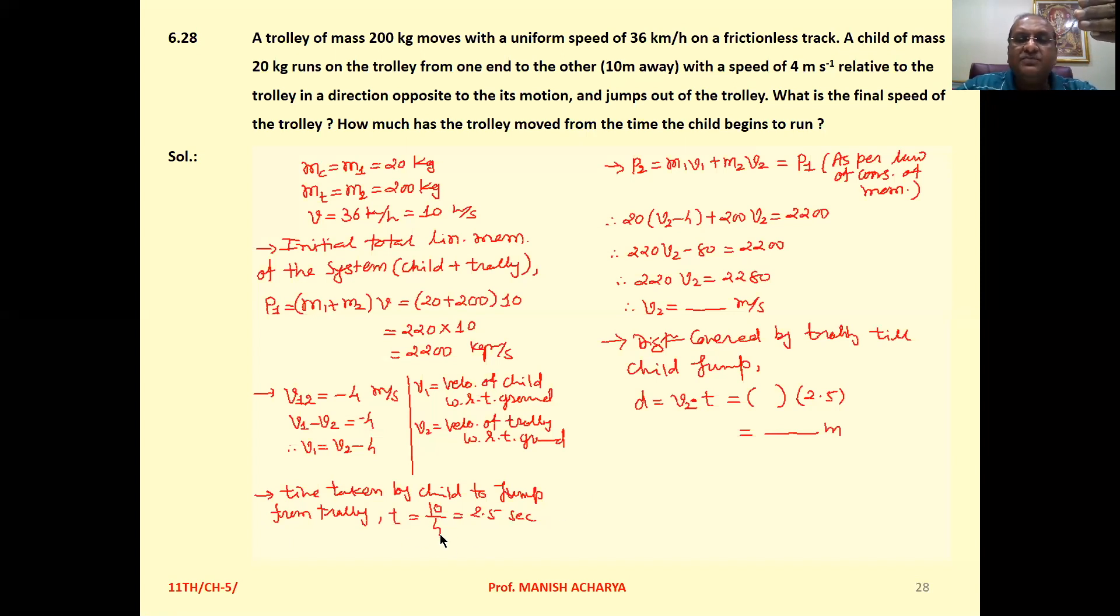The time taken by the child to jump from the trolley is distance upon speed: 10 ÷ 4 = 2.5 seconds.